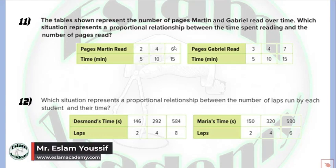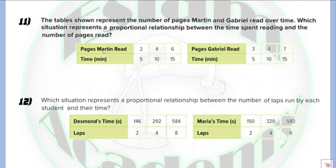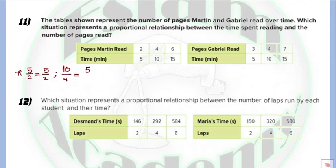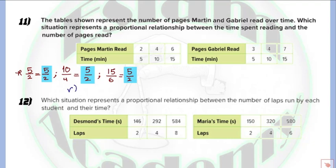In this problem, we have a relation between the number of minutes and the number of pages. We need to find which table represents a proportional relationship. To check, we find the rate for each pair. For the first table: 5 over 2 in simplest form is 5/2. The second pair, 10 over 4, simplifies to 5/2. The third pair, 15 over 6, also simplifies to 5/2. Since all rates are equal, this relation is proportional.